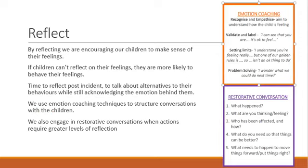Now we move on to the final element of our relational approach: reflect. By reflecting, we're encouraging our children to make sense of their feelings. If children can't reflect on their feelings, then they're more likely to behave them. So conversations to support emotional and mental health are key. We provide our children time to reflect after something's happened, to discuss alternatives to their behaviour, but we still acknowledge the emotions that they were feeling at the time.